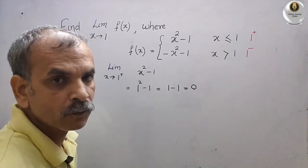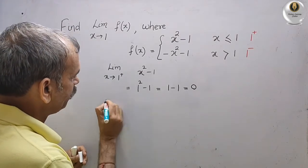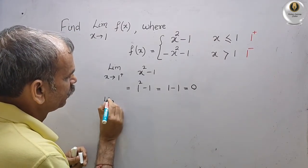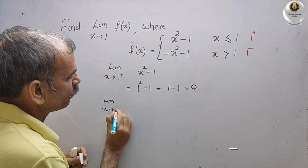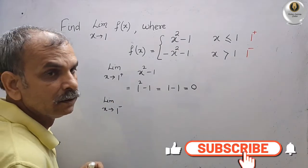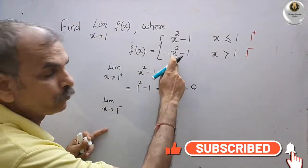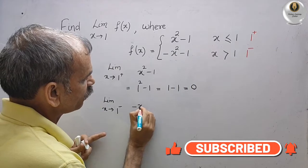What we will get: we will get 1 squared minus 1, that is equal to 1 minus 1, that is equal to 0.